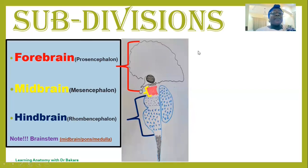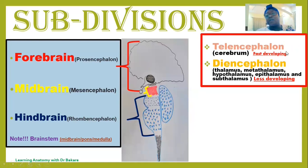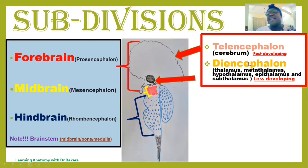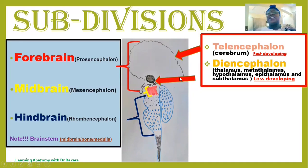Going back to the forebrain, the embryonic prosencephalon transformed to become the forebrain, and it is further subdivided into two subregions. We have the telencephalon, the most superior part, basically made up of the cerebral hemisphere. Inferior to the telencephalon, we have the diencephalon, the most inferior part of the prosencephalon. During development, the telencephalon is fast developing while the diencephalon is less developing, which is why the cerebral hemisphere tends to extend and cover the diencephalon.